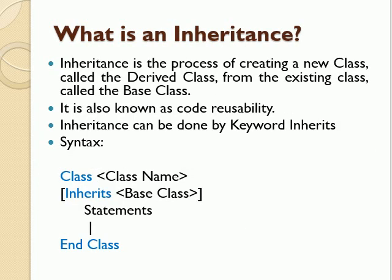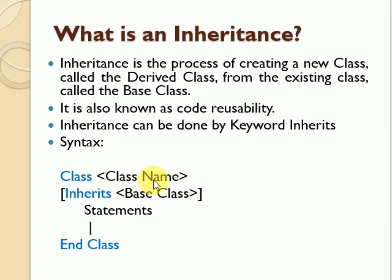Now we discuss inheritance. Inheritance is the process of creating a new class, called the derived class, from an existing class, called the base class. It is also known as code reusability. Inheritance is done using the keyword inherits. The syntax is: declare the class keyword with the class name, then use the inherits keyword followed by the name of the base class, then the class statements, and close with end class.